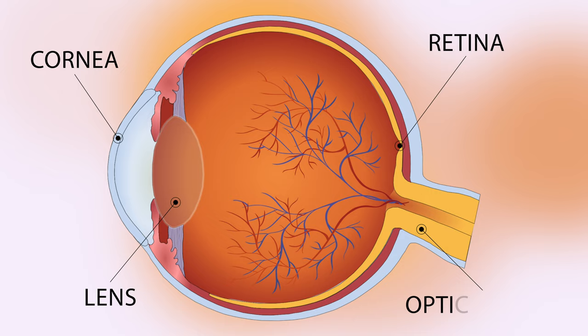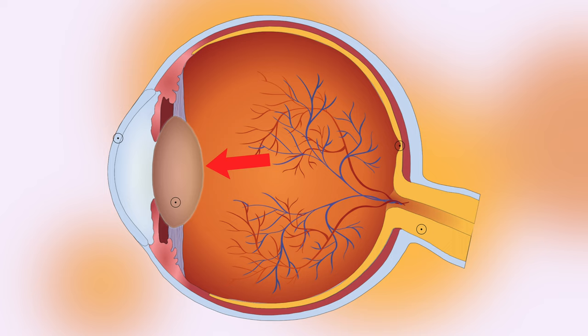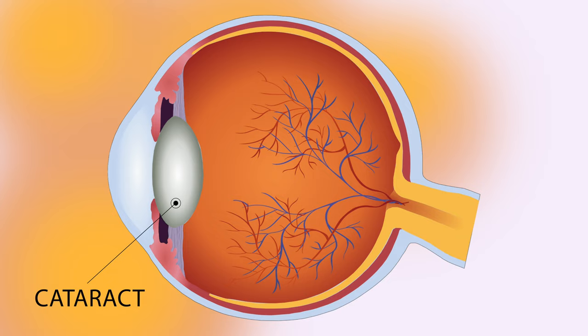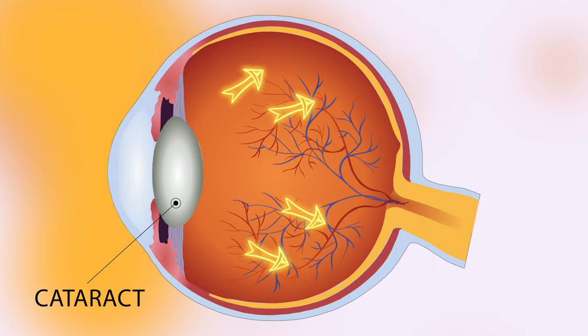As we all get a little bit older, the proteins within the lens clump together, causing a clouding of the lens. This is a cataract. This cloudy lens causes incoming light to scatter within the eye, causing the visual symptoms that are typically associated with cataracts.